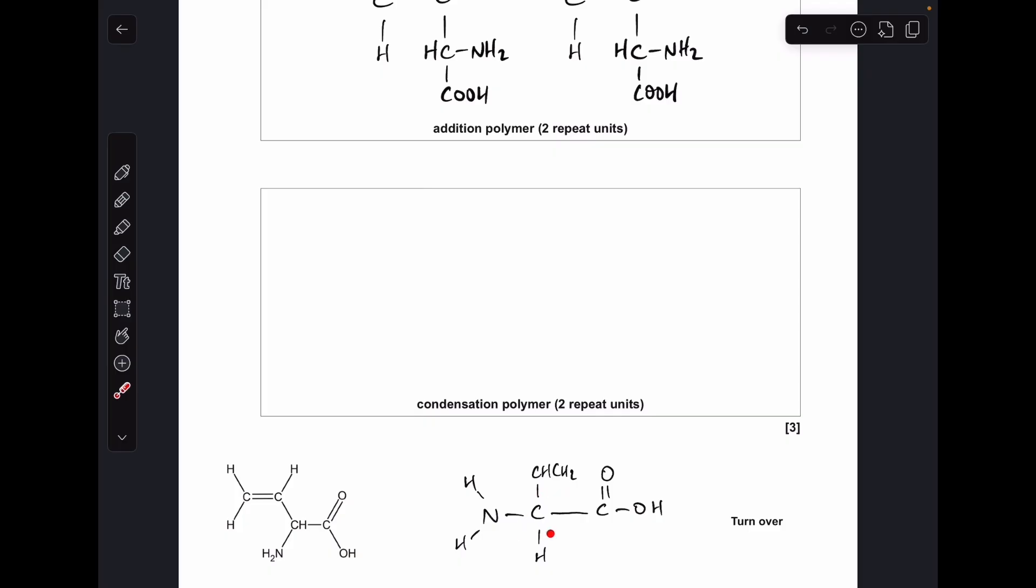So something like that is much easier to work with because all we need to do now is take out hydrogen from the amino group and OH from the carboxyl group. Obviously there's your water coming out. So we'll join the two bits together, which means that the two repeat units are going to look like that.